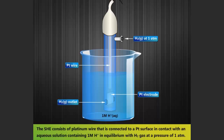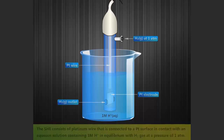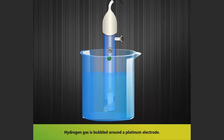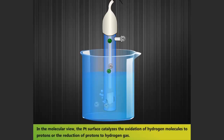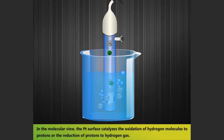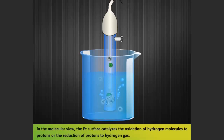Let us take a look and see what happens at the Standard Hydrogen Electrode. In this Hydrogen Electrode, hydrogen gas is bubbled around the Platinum Electrode. In the molecular view, the platinum surface catalyses the oxidation of hydrogen molecules to protons, or the reduction of protons to hydrogen gas.